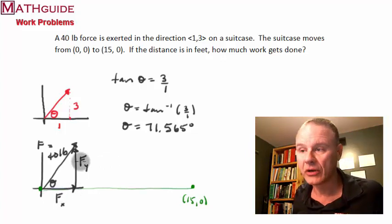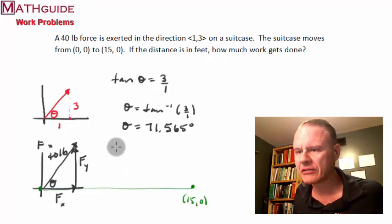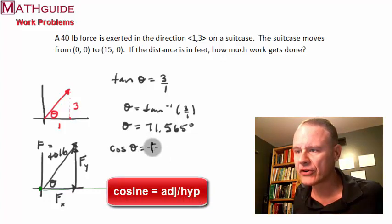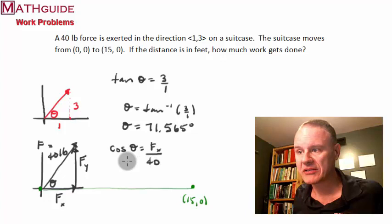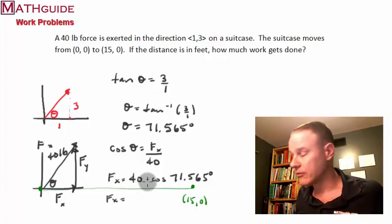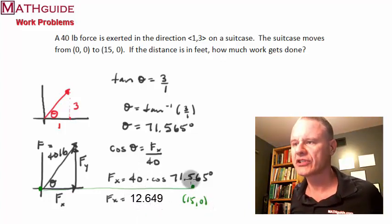To calculate the horizontal force, we go back to trigonometry. The cosine of the angle equals the adjacent side — that's the horizontal force — divided by the hypotenuse, which is 40. Cross-multiplying, the horizontal force equals 40 times the cosine of 71.565 degrees. Plugging that into a calculator gives approximately 6.326 pounds.